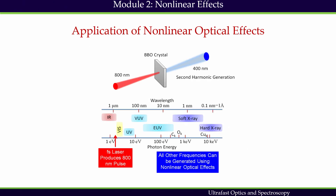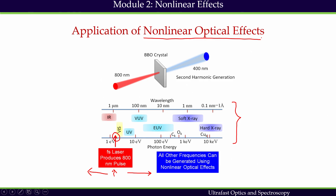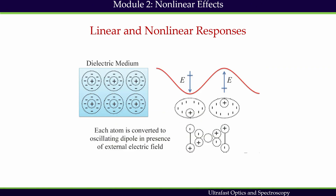Most currently available femtosecond laser oscillators or amplifiers produce pulses with center wavelength near 800 nanometers. This 800 nanometer light can be converted to any frequency — both in the IR and in the X-ray or UV regime — with the help of non-linear optical effects. That is why non-linear optical effects are very important, with enormous applications in frequency conversion, primarily done in dielectric medium.